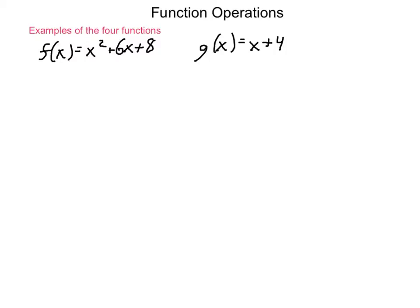If we're given the fact that f of x equals x squared plus 6x plus 8, and g of x equals x plus 4, we're going to perform the four basic operations with this. First up, we have f plus g of x. That simply means we're going to take x squared plus 6x plus 8, our f of x function, and to that we're going to add x plus 4, our g of x function. Combining like terms, x squared plus 6x and x can be added together, giving us 7x plus our constant 8 and constant 4 added together, giving us 12.